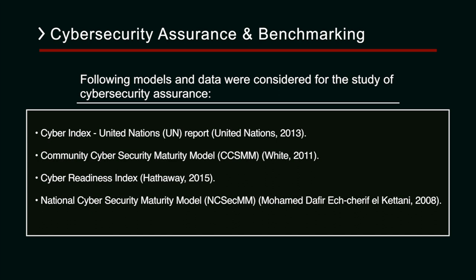The cyber security posture assessment and assurance practices implemented by 16 countries were studied to understand the global scenario — what is going on globally to generate assurance in cyber security. We tried to identify different methods adopted for cyber security assurance at a national level. For this study, following models and data were considered: the cyber index from the United Nations, the Community Cyber Security Maturity Model, the Cyber Readiness Index, and national cyber security maturity models. We tried to figure out how these models and frameworks help in generating cyber security assurance at a national level.